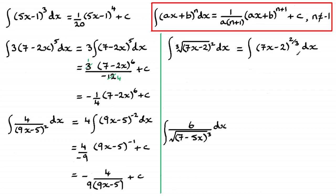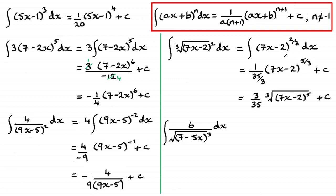Now dealing with roots. All I've got to do is add 1 to the power. Adding 1 — or 3 thirds — to the power of 2 thirds gives 5 thirds. So it's 7x minus 2 to the power of 5 thirds. Then I divide by 5 thirds times 7, which is 35 thirds. Multiplying top and bottom by 3 gives 3 over 35. And the power 5 thirds can be written as the cube root of (7x minus 2) all to the power of 5.